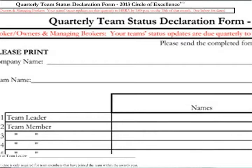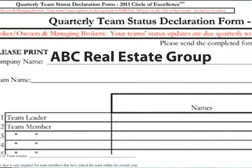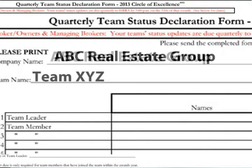When you fill out that quarter report, begin on the top line by entering your company name, and below on the second line, your team name — matching the team name you will provide on your Circle of Excellence application.